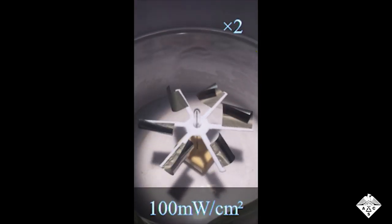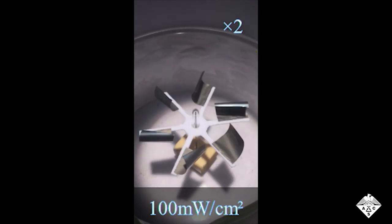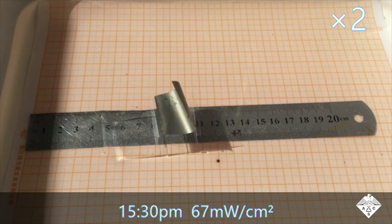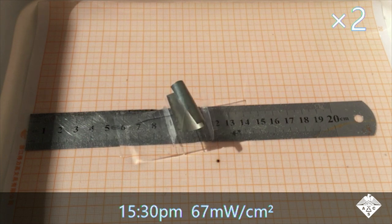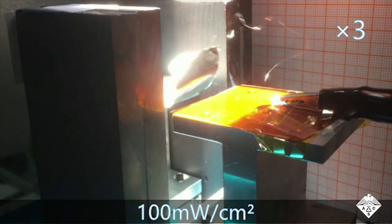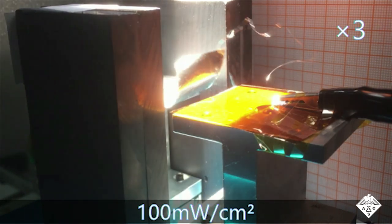The team demonstrated the flapping wings in several applications. For example, they fashioned a light-driven whirligig that rotated continuously without any wind. They also made a toy boat that sailed across water outside in natural sunlight, and a device that converted simulated sunlight into an electric current.